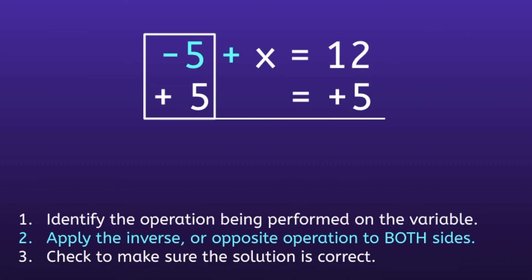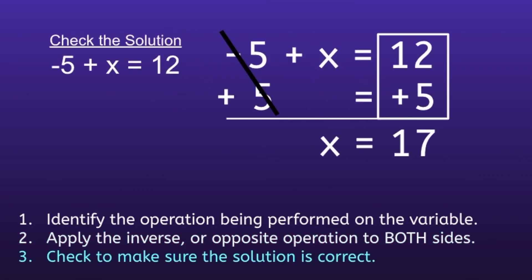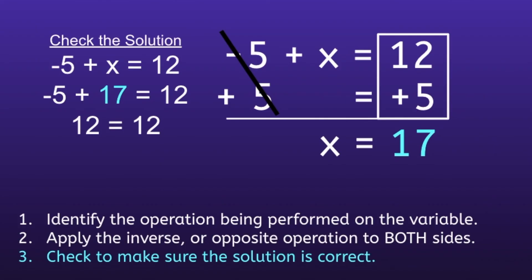On the left side, negative 5 plus 5 equals 0, leaving just X. On the right side, 12 plus 5 equals 17, so our solution is X equals 17. To check: rewrite the equation, negative 5 plus X equals 12. Substitute in 17: negative 5 plus 17 equals 12 — and negative 5 plus 17 does equal 12. Since both sides are equal, our solution is correct: X equals 17.